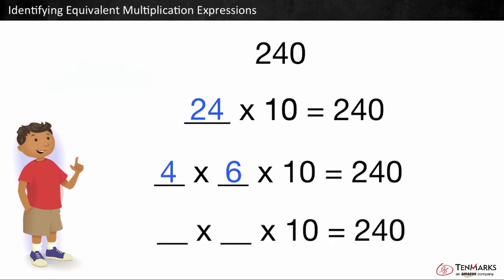Is there another way to write 240 as a product of three factors? Yes. 3 times 8 is also equal to 24. We can write 3 times 8 times 10, which also equals 240.